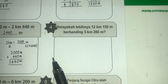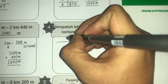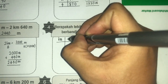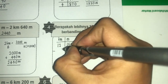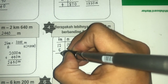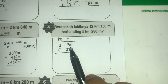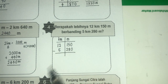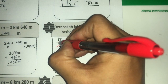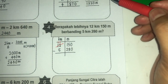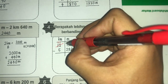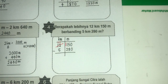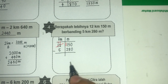Bermaksudnya kita kena guna operasi tolak. Buatlah seperti biasa — kilometer dan meter, masukkan nombor dengan betul. 150 meter tolak 280 meter tak boleh sebab 150 kecil. Kita pinjam, jadi 11. 1000 meter yang kita pinjam 1 kilometer tu, tambah 150 bermaksud 1150. Cikgu letak satu je, congak terus dapat jawapan 1150. Baru kita boleh tolak.